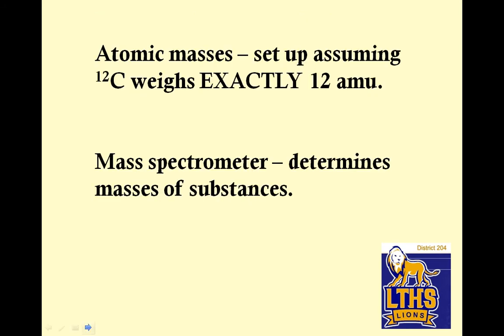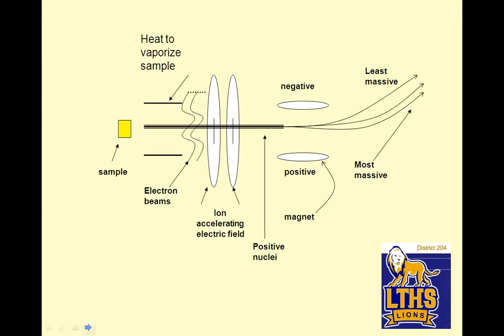Atomic mass setup, assuming carbon-12 is exactly 12, we talked about that. A mass spectrometer determines the masses of substances. So that means the masses of the parts of a substance, so that will determine the types of atoms that are in it.